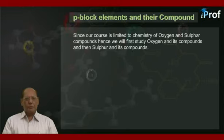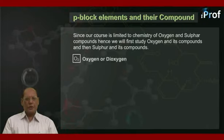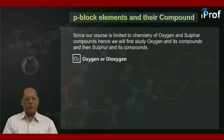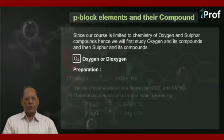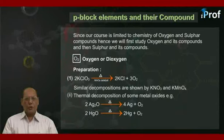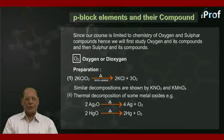Let us begin with O2, oxygen, also known as dioxygen. Method of Preparation Number 1: 2KClO3, on heating in the presence of MnO2 as catalyst, gives 2KCl plus 3O2.